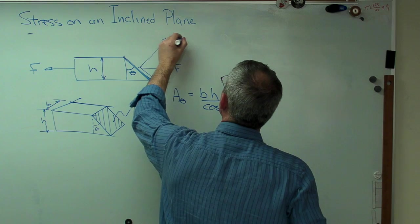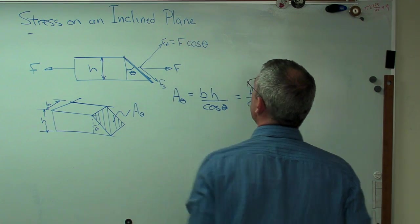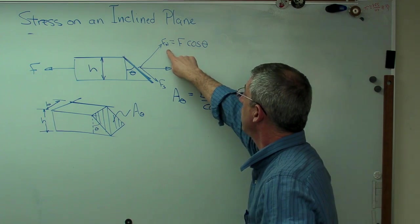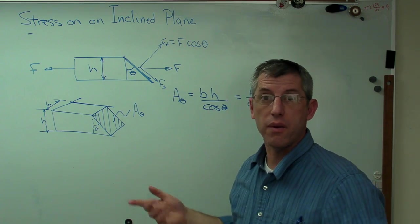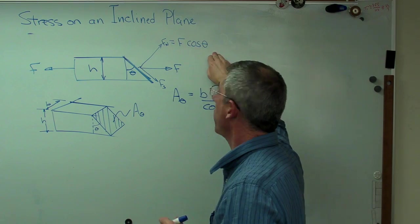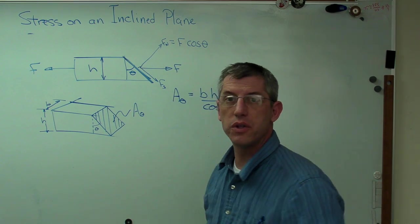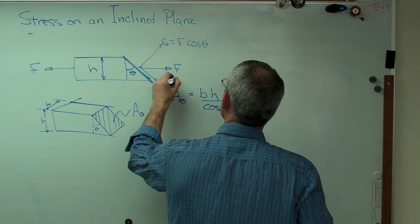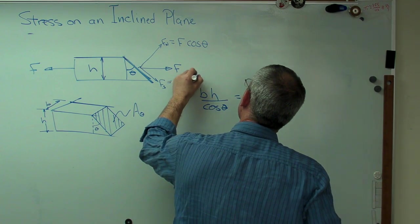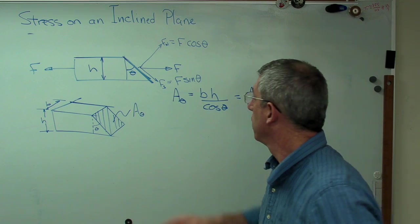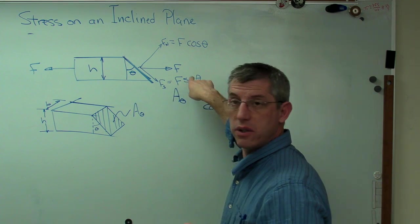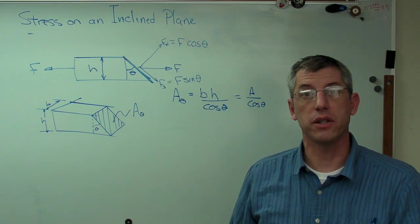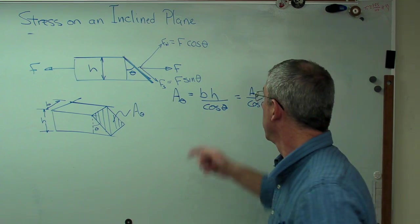That's going to be F cosine theta. Because if theta is zero degrees, then F normal is going to be F. Well, that makes sense. And if this goes all the way to 90 or tends towards 90, that'll tend towards zero. So that must be right. And Fs is going to be F sine theta, for the same reasons. When this is zero degrees, that's going to be zero. And when this tends towards 90 degrees, that's going to tend towards one. And that's going to tend towards F. So this is good.